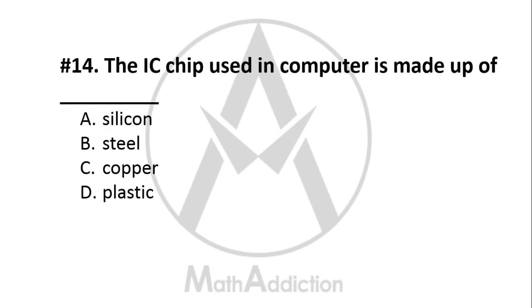Question No. 14: The IC chip used in a computer is made up of — what? Option A: Silicon, Option B: Steel, Option C: Copper, Option D: Plastic. The right answer is Option A — Silicon. IC chips used in computers are made of silicon.